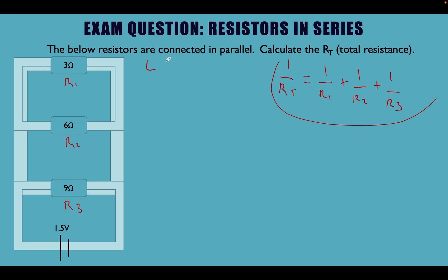This time we're going to use the lowest common denominator method. Let's write this out as needed: 1 over Rt is equal to 1 divided by R1, which is 3 ohms, plus 1 over R2, which is 6 ohms, plus 1 over R3, which is 9 ohms.